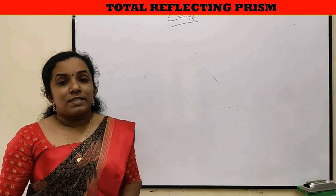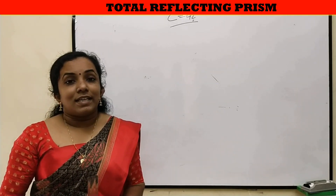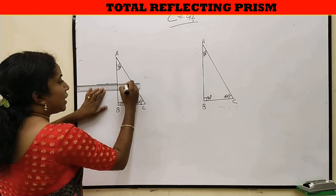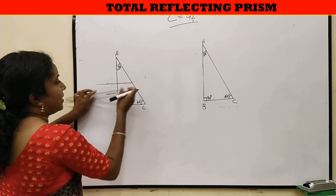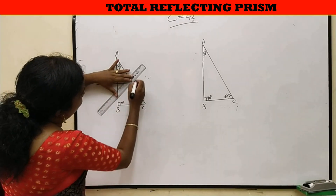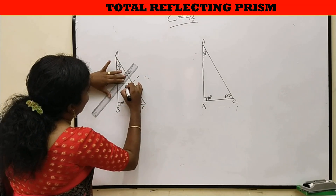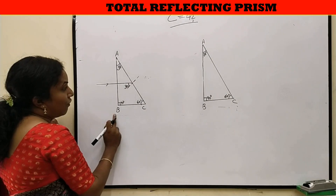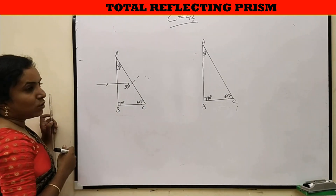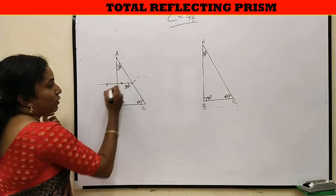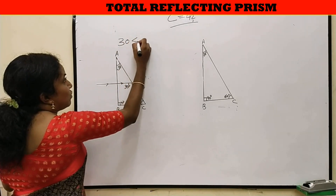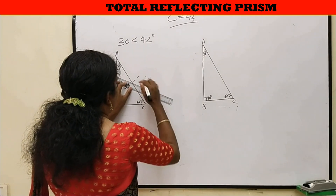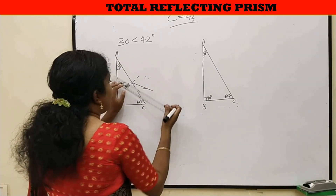Next, consider a prism with angles 90, 30, and 60 degrees. If the ray of light falls normal to face AB, it passes without refraction and reaches surface AC. There the angle of incidence equals the refracting angle between AB and AC, which is 30 degrees. Since 30 degrees is less than the critical angle of 42 degrees, the ray refracts — there is no total internal reflection in this case.